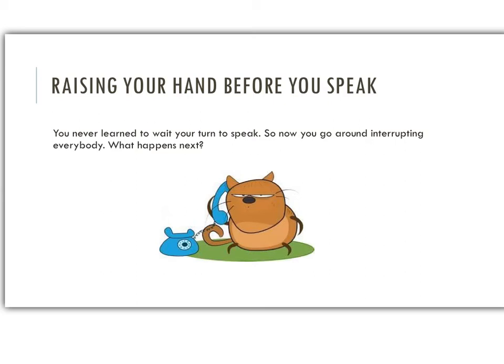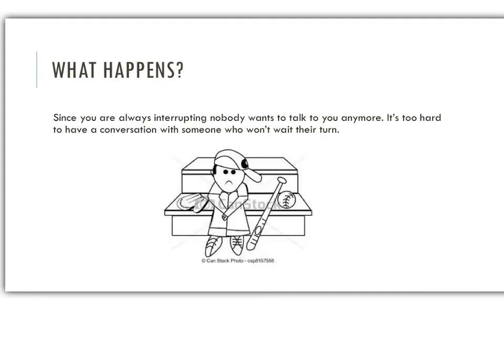Let's say you never learned to wait your turn to speak. So now you go around interrupting everybody. What could happen next? Since you're always interrupting, nobody wants to talk to you anymore. It's too hard to have a conversation with someone who won't wait their turn.